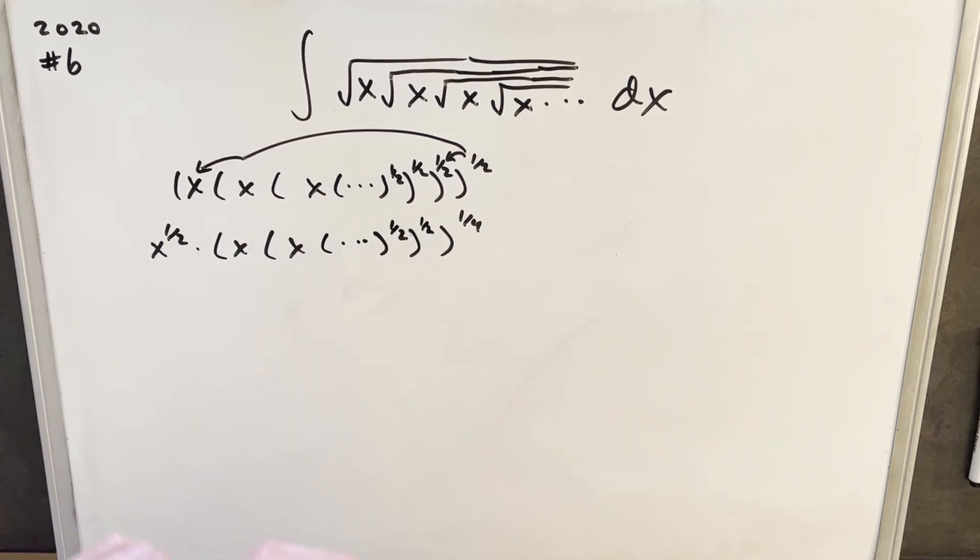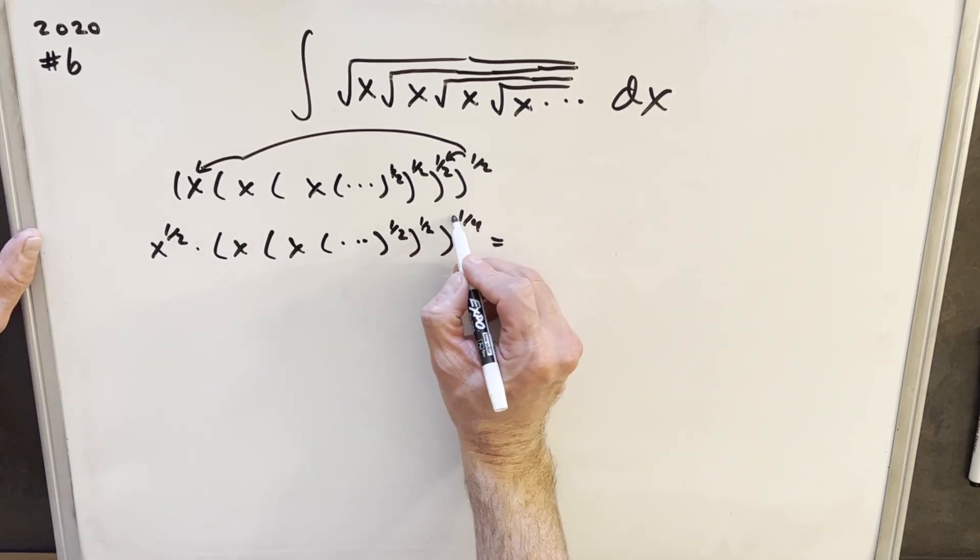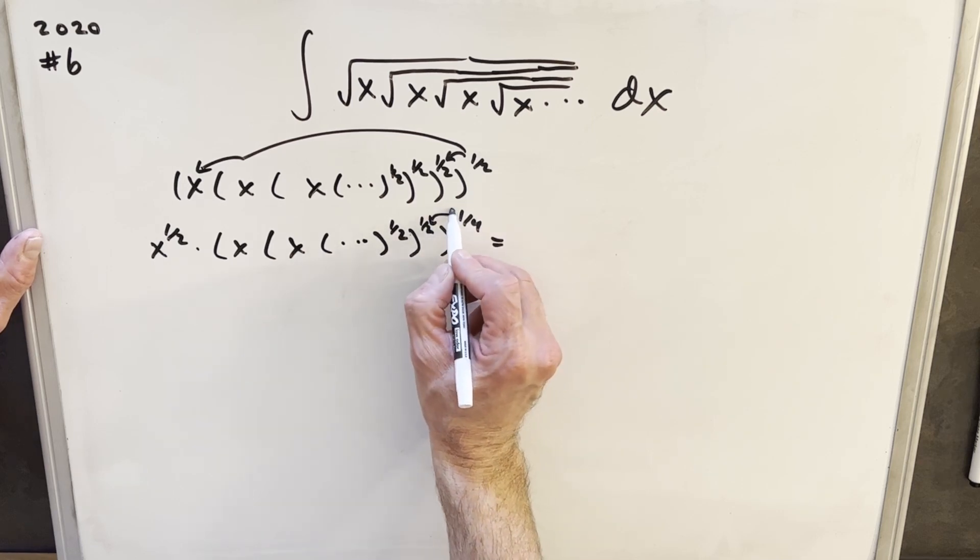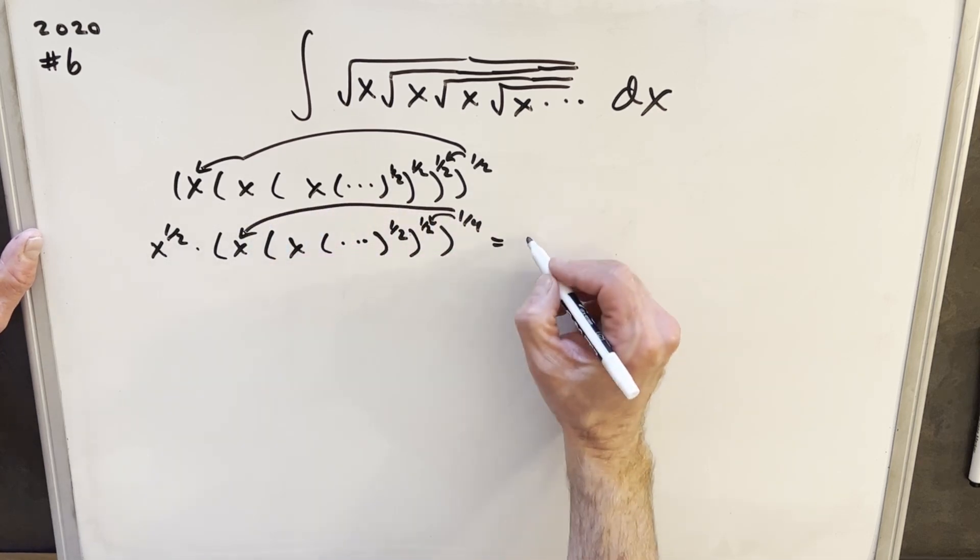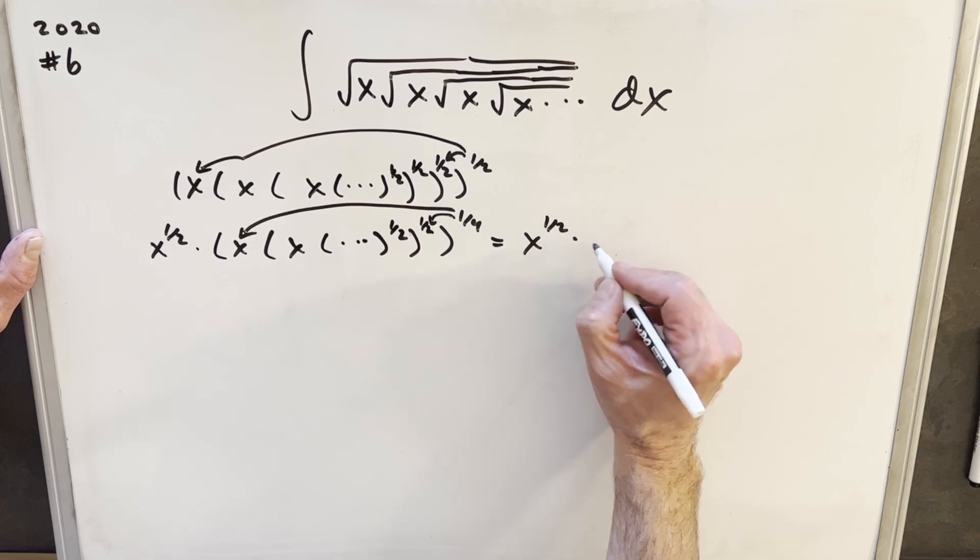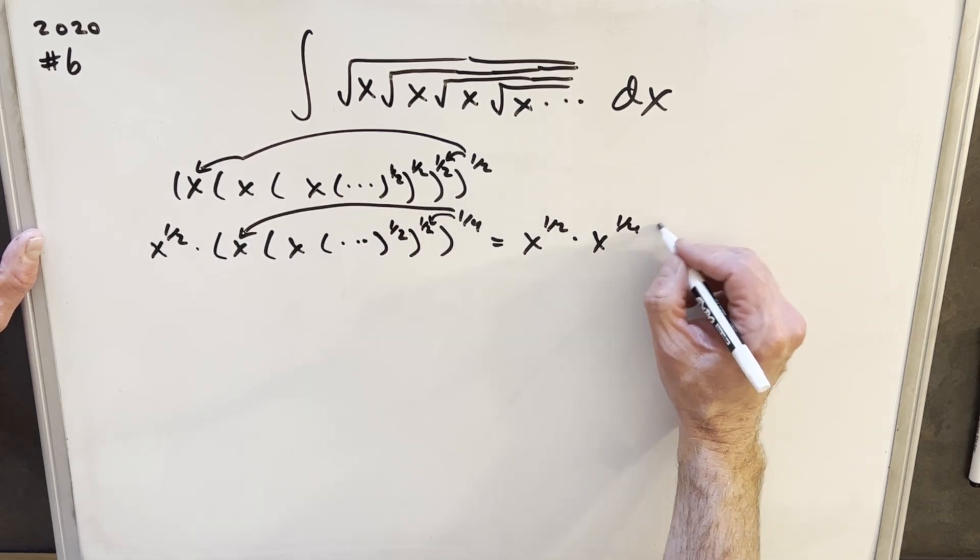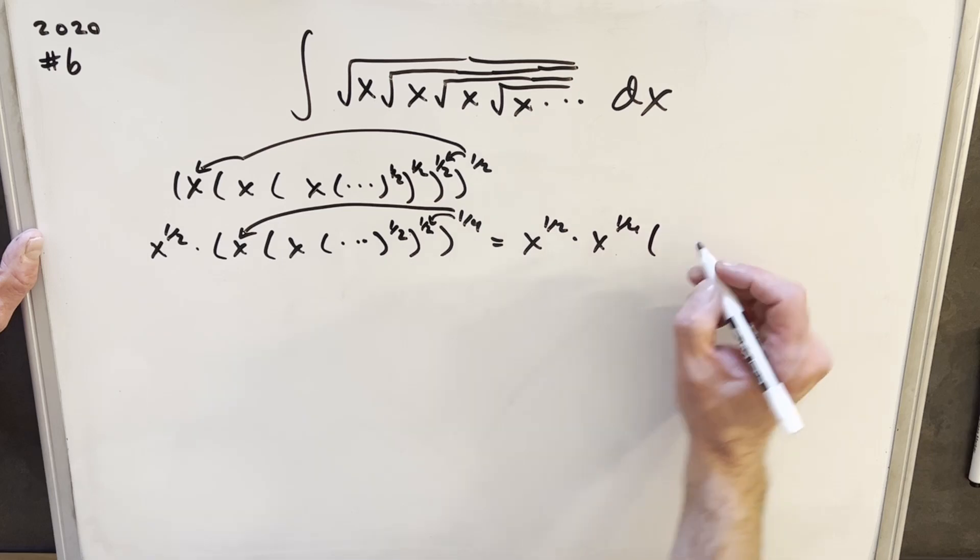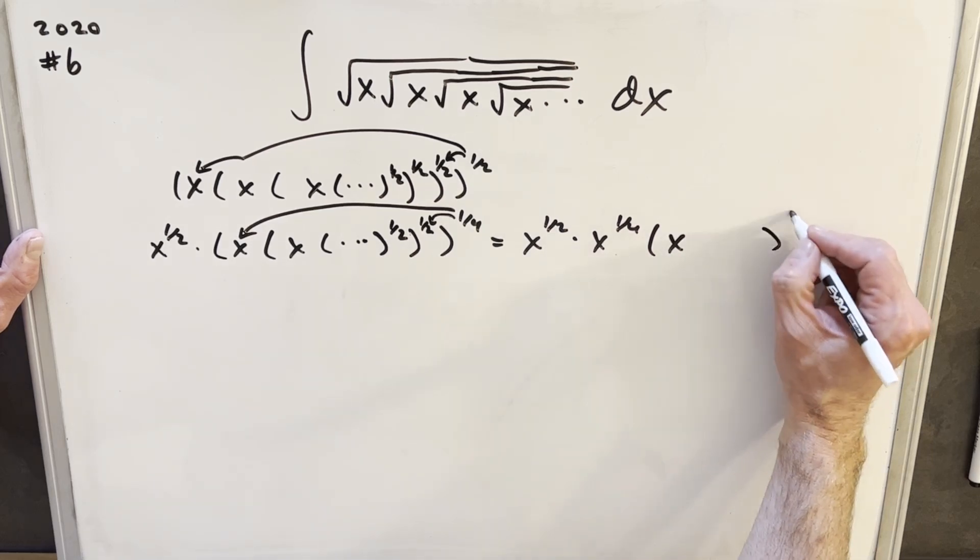And then what that's going to allow us to do is just kind of repeat that over and over again, because now we can take our one fourth and distribute it in here. And distribute it here. So we'll have X to the one half times X to the one fourth times this whole thing. In here, we're going to have an X to the one eighth around this now.